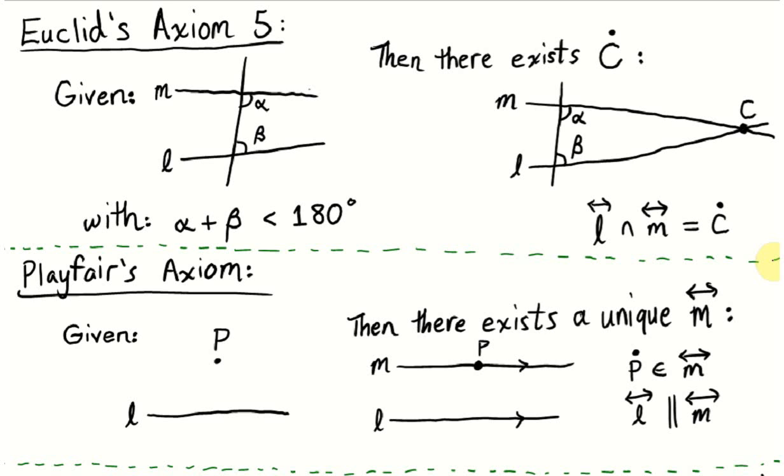The fifth axiom, however, is a little bit different. It states, given any two lines L and M, if a transversal cuts them and the two interior angles on the same side sum to less than 180 degrees, or two right angles, then those two lines, if extended, will eventually intersect at a point on the same side where the two angles sum to less than 180 degrees.